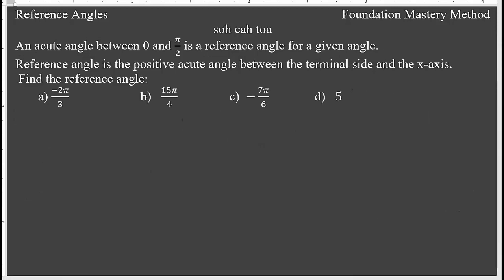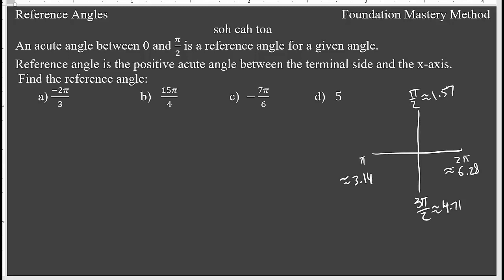Now we are looking at radian measure. An acute angle between 0 to π/2 is a reference angle. For reference, a complete rotation is 2π ≈ 6.28; π/2 ≈ 1.57; π ≈ 3.14; and 3π/2 ≈ 4.71. This will help us understand the location of each angle.